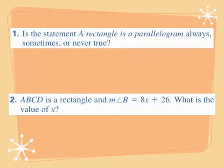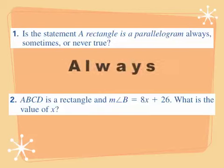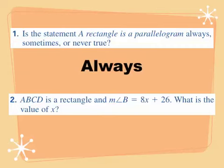Part A asks: is the statement 'a rectangle is a parallelogram' always, sometimes, or never true? A rectangle is always going to be a parallelogram, because the opposite angles of a rectangle are always congruent since all angles of a rectangle are right angles.